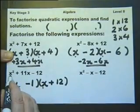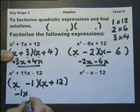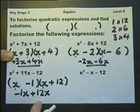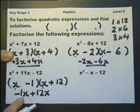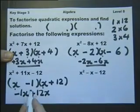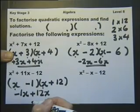x times x is x². Minus 1 times x is minus 1x. Plus 12 times x is plus 12x. Yes. Plus 12x and minus 1x will give me that plus 11x. So that's great. And then the minus 1 times the plus 12 will give me the minus 12 at the end there.